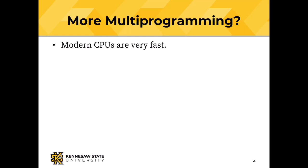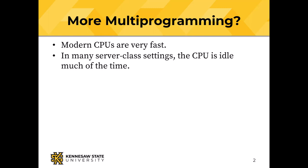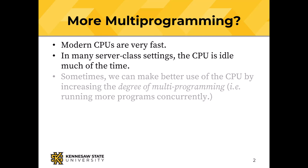Modern CPUs, as the slide says, are very fast. Modern CPUs have multiple cores, more than one instruction stream, millions of instructions per second. Often that means the CPU is idle most of the time. So probably the most expensive part of a computer system is sitting there not doing work.